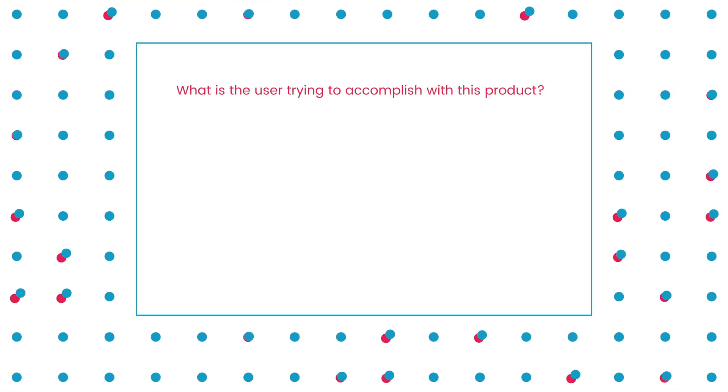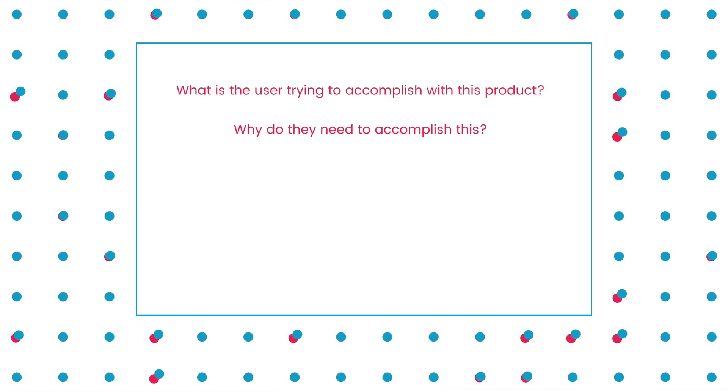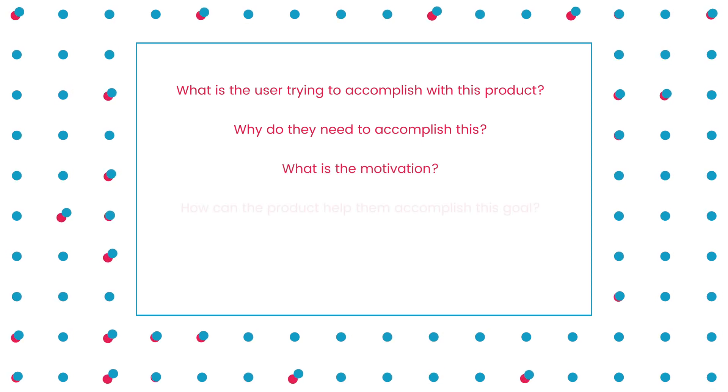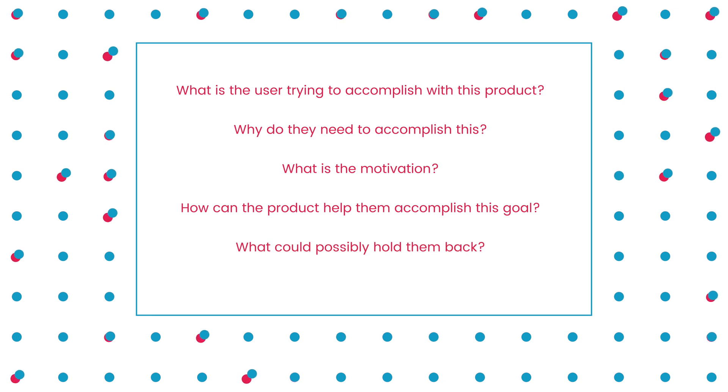Always put yourself in the shoes of the user. Start thinking about the problems they would face and how they could overcome them. Different users solve problems in different ways — that's important to consider when mapping out a user flow. Some questions you may want to answer are: what's the user trying to accomplish with this product? Why do they need to accomplish it? What's their motivation? How can this product help them accomplish this goal? What can possibly hold them back?